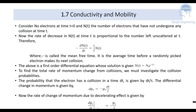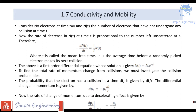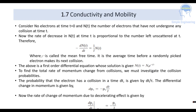If we consider n₀ electrons at time t = 0, then n(t) is the number of electrons that have not undergone any collision at time t. The rate of decrease of n(t) is proportional to the number left unscattered: −dn(t)/dt = (1/τ̄)·n(t), where τ̄ (mean free time) is the average time before a randomly picked electron makes its next collision. The solution to this first-order differential equation is n(t) = n₀·e^(−t/τ̄).